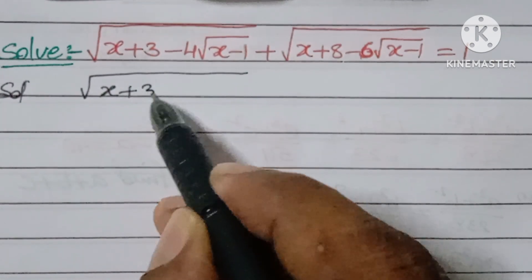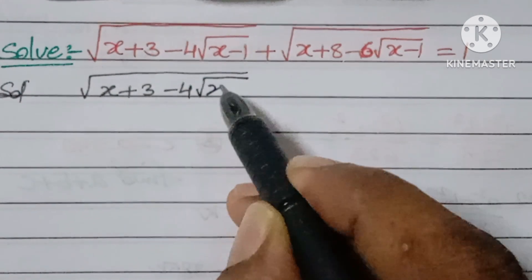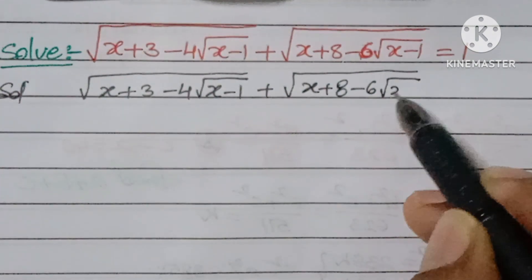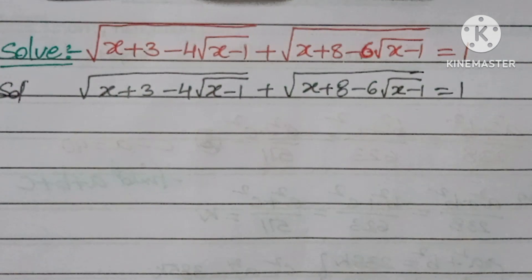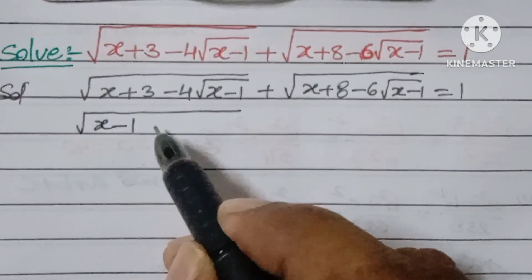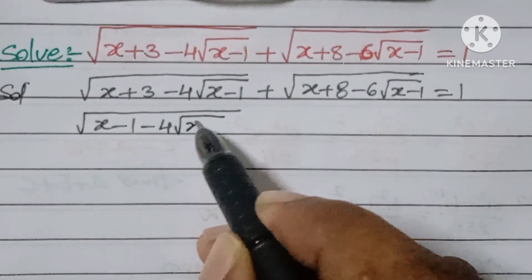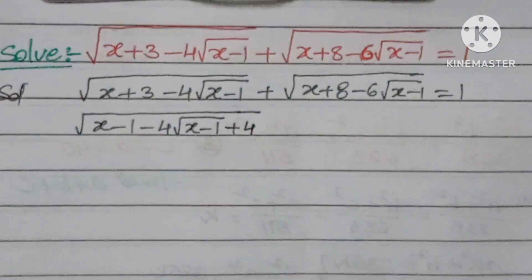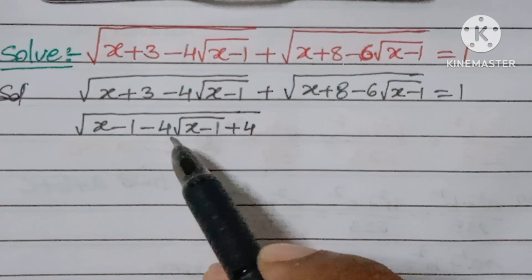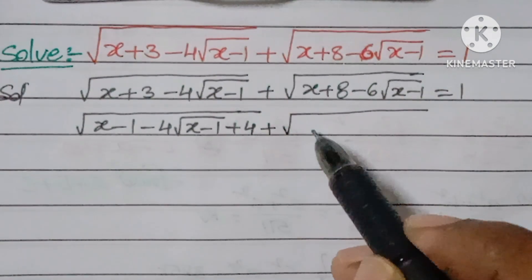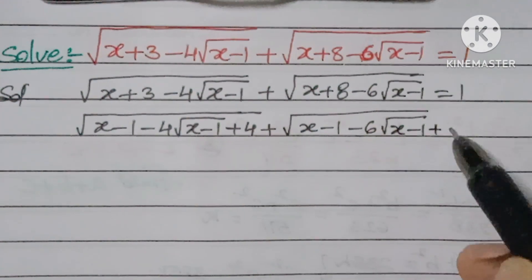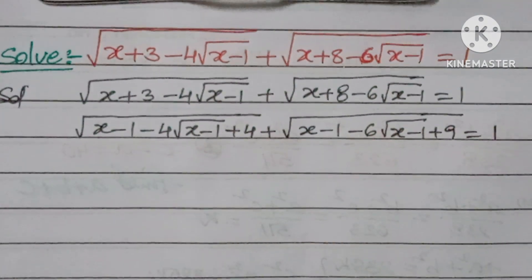So here, square root of (x + 3 - 4√(x-1)) plus square root of (x + 8 - 6√(x-1)) equals 1. We need to do some adjustments. We rewrite the first expression as (x - 1) - 4√(x-1) + 4, and the second as (x - 1) - 6√(x-1) + 9, using the identity a² - 2ab + b².